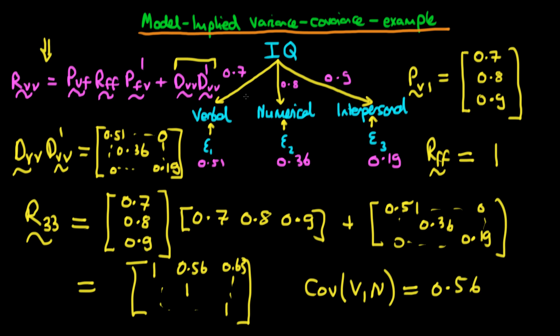So let's just double check that that's exactly what we would have got if we were just using our path method. Essentially, what we do is we start at verbal, we walk along until we hit the factor, which is IQ, and then we walk up to numerical. And in doing so, we pass 0.7 and 0.8. Hence, we have to multiply those together, and we get 0.56 overall. And because there's no covariance of the errors here, we don't need to add anything else onto that. So it's exactly the same as what we would have got had we just used our walking path method.